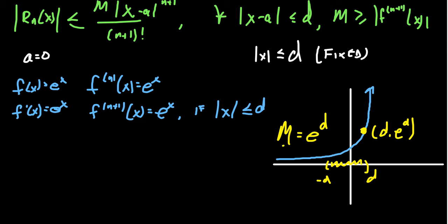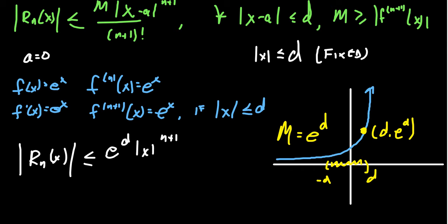Now let's look at Taylor's inequality again. The absolute value of R_n of x will be less than or equal to e to the d times the absolute value of x raised to the (n+1) power over (n+1) factorial.